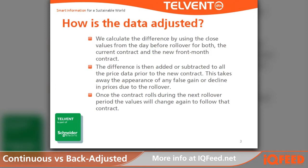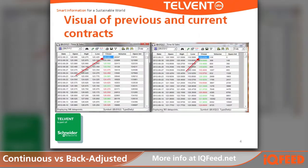Once the contract rolls during the next rollover period, the values will change again to follow that contract. As you can see on these two time and sale screens, we have the previous contract for the electronic live cattle of August 2012 and the current contract of live cattle for October.